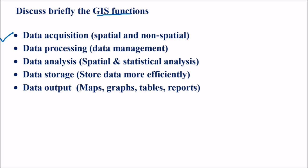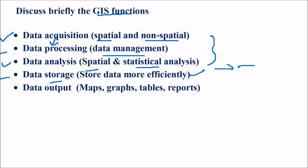Discuss briefly GIS functions. First is data acquisition — the data may be spatial or non-spatial. Then the acquired data, whether raw or in certain format, needs processing to make it suitable for GIS through data management. Then with data available, you do data analysis — spatial analysis, statistical analysis. Then data storage, which must be efficient for storing, accessing and traversing. Finally, data output — that is maps, graphs, tables, reports, and all related GIS outputs.